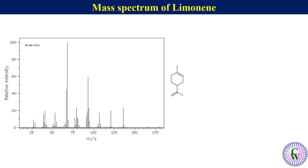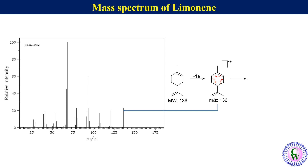The mass spectrum of limonene: the molecular weight of limonene is 136. It has a cyclohexene core; removal of one pi electron gives a molecular cation with m/z of 136. As we have seen, cyclohexene undergoes retro-Diels-Alder ring opening, so ring opening like this will give 2-methylbutadiene and a 2-methylbutadiene radical cation with m/z value of 68.